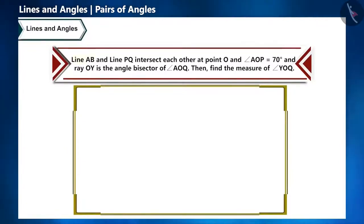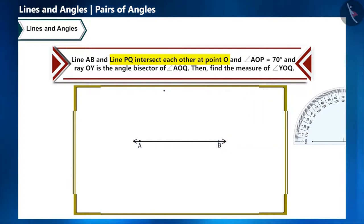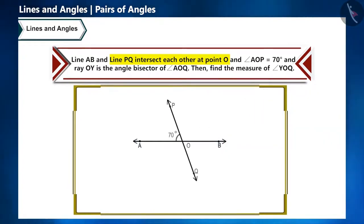First of all, let's draw a line AB. You can draw it in any way. But at the time of drawing the line PQ, we need to keep in mind the angle. We need to intersect line AB in such a way that angle AOP makes an angle of 70 degrees. So line PQ will be like this.